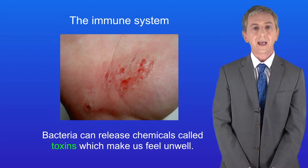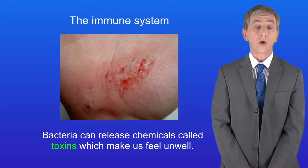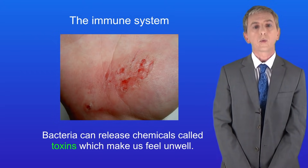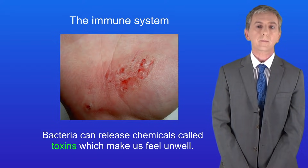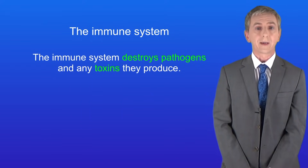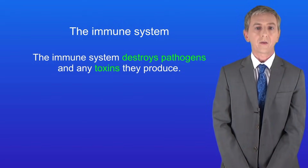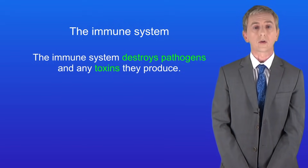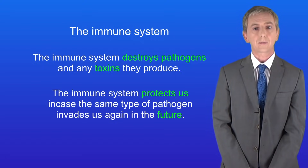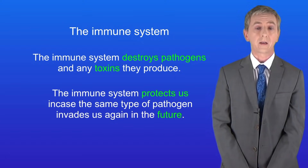So to protect us in case this happens, the body also has the immune system, and we're looking at that in this video. The immune system has got two main functions. Firstly the immune system destroys pathogens and any toxins they produce. Secondly the immune system protects us in case this same type of pathogen invades us again in the future.